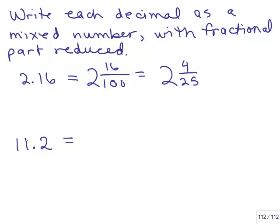Next one. The whole number part is 11. So that stays the same. And I've got 2 tenths. Because there's only one digit after the decimal point. And that reduces to 11 and 1 fifth.